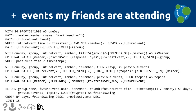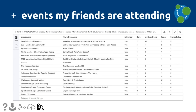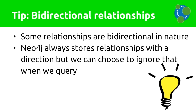Neo4j always stores relationships with a direction, so we have to handle bidirectional relationships in our application and ignore direction when we query. Adding that friendship into the events query, we can now see which friends are going to suggested events. For the top Neo4j modeling result I've been to 94 events, and it also shows how many topics that group has in common and lists friends who are going — which could be useful if there's a particular person I want to meet. This is another example of inferring a missing link: a friends relationship that wasn't in Meetup's database but which we can derive from analysis of the data.